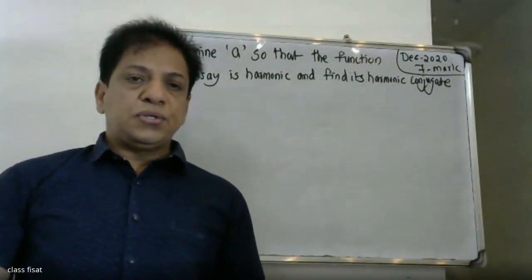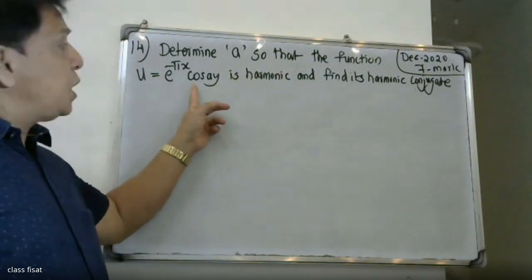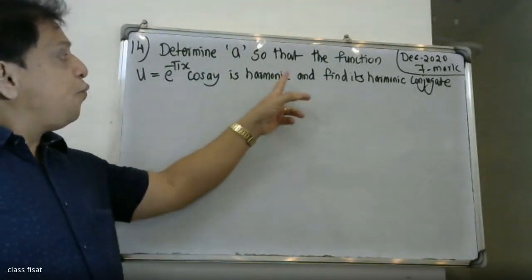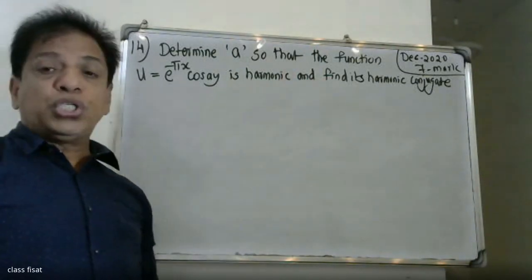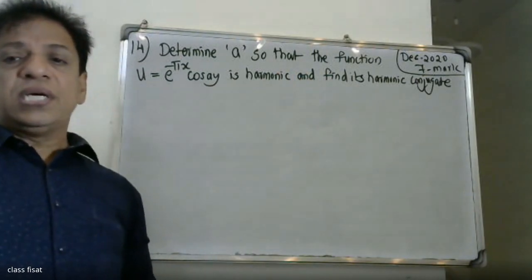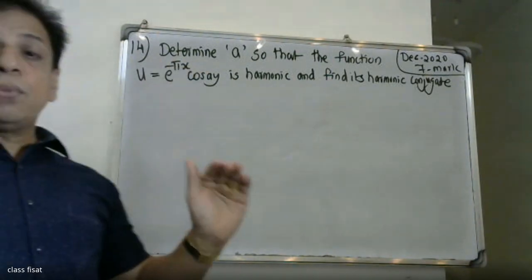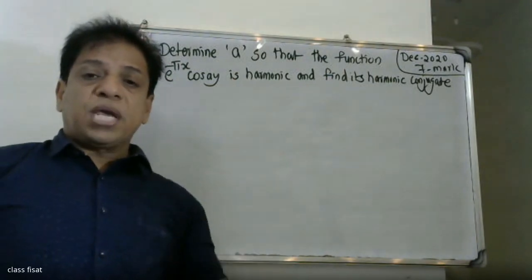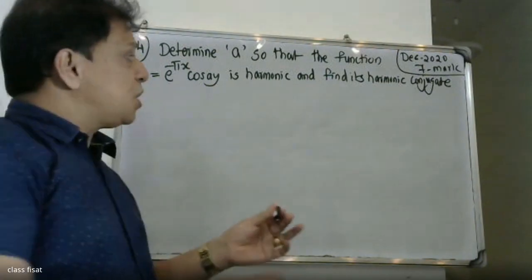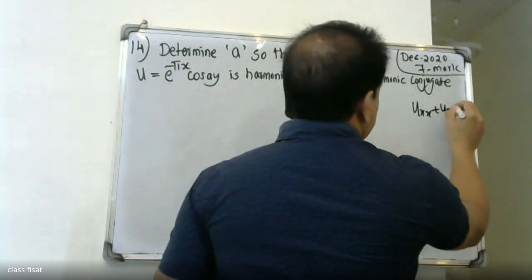Good morning students. The question: determine 'a' so that the function u = e^(-πx) cos(ay) is harmonic. To find its harmonic conjugate. For a function to be harmonic, it should satisfy the Laplace equation: u_xx + u_yy = 0.